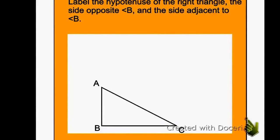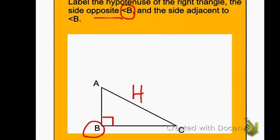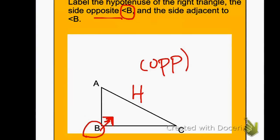Now on this one, they want us to label the hypotenuse of the right triangle. This would be the hypotenuse because it's opposite the right angle, so I'm going to put an H there. We want to locate the side opposite angle B. Notice that angle B is the right angle, so the side opposite is also your hypotenuse. Since the opposite side and the hypotenuse are both the same side of that triangle...